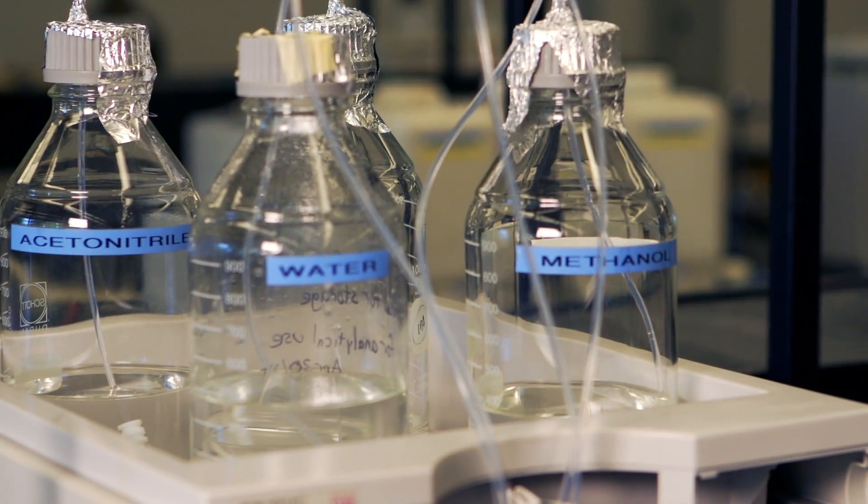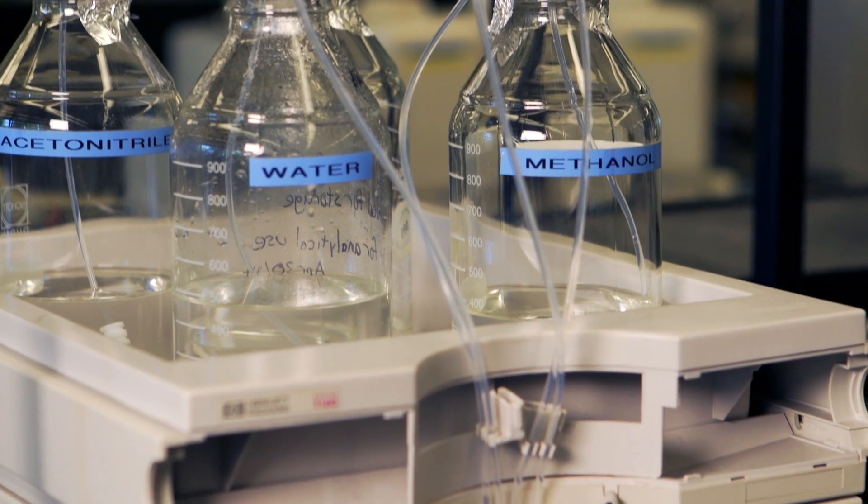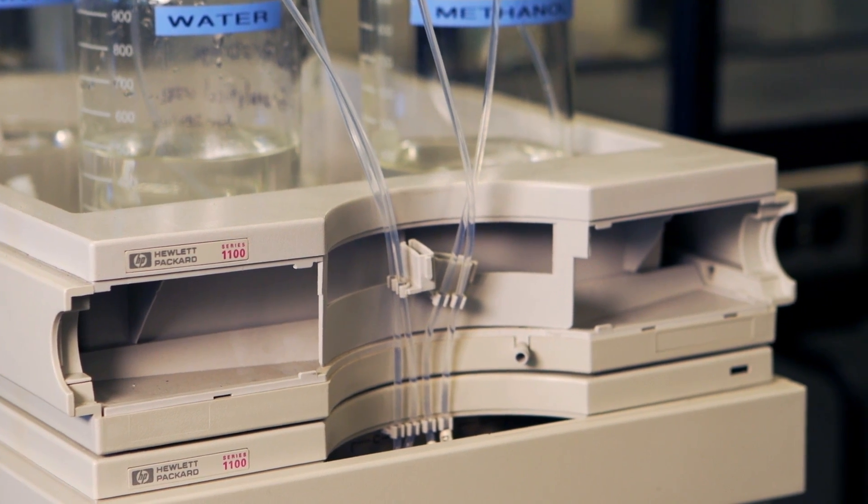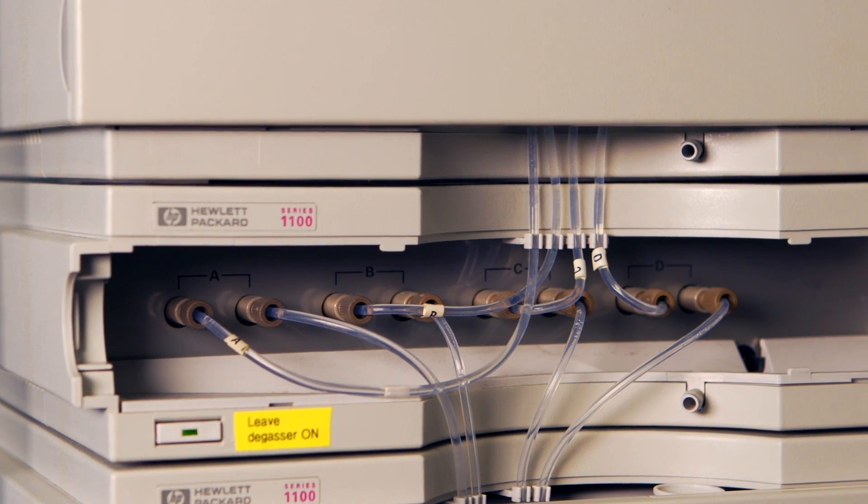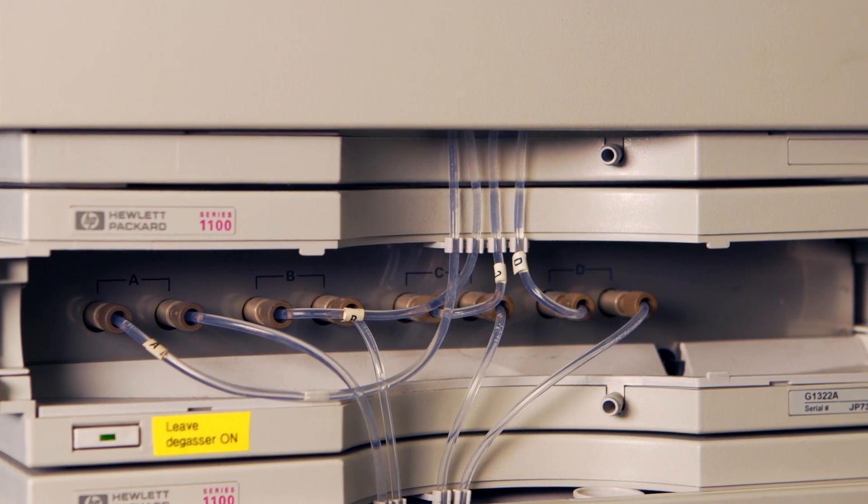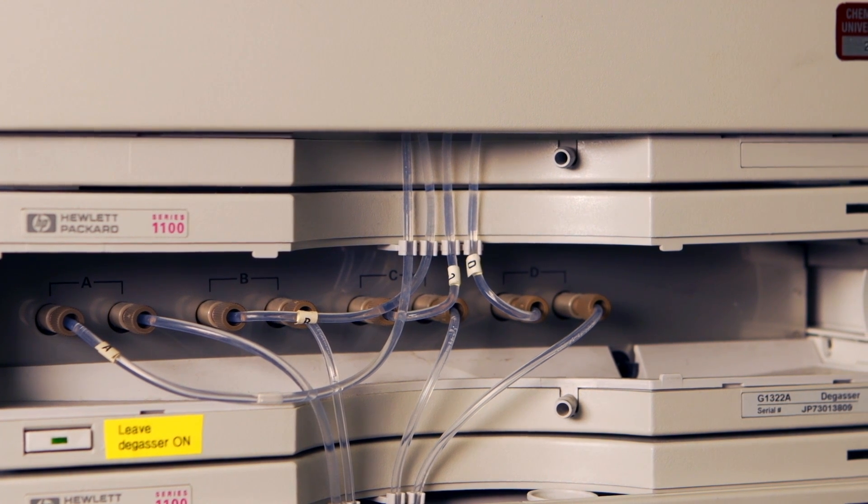We'll start with the solvent reservoirs. The solvent reservoirs hold the solvents that will be used as the mobile phase. Up to four solvents can be mixed to make up the mobile phase. Before the solvent is pumped into the column, it's first moved through the solvent degasser. Dissolved air is removed from the solvent to give more reproducible pumping and to avoid bubble-related peaks in the chromatogram.